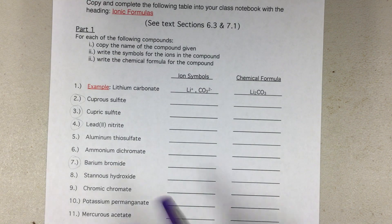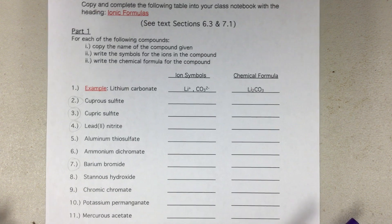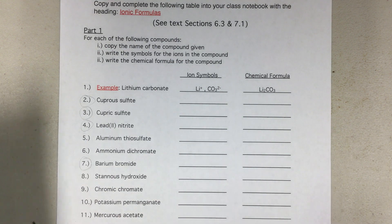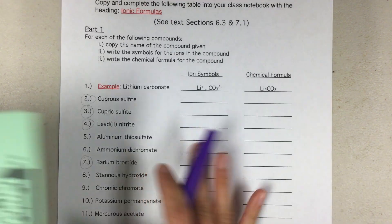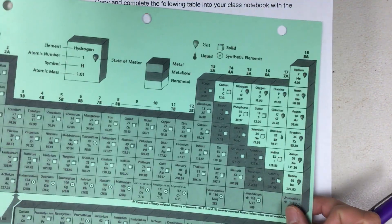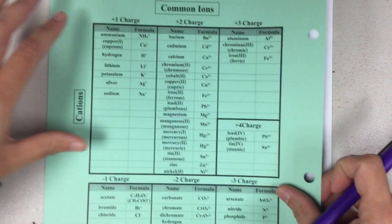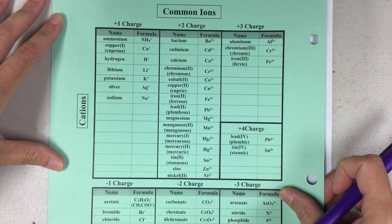I'm going to do a few examples from each part so you get a good idea of what each of these sections is asking you to do. You'll need your computer to get the questions on the lesson calendar, and you'll also need your periodic table with the ions on the back. On the top you have cations and on the bottom you have the anions.